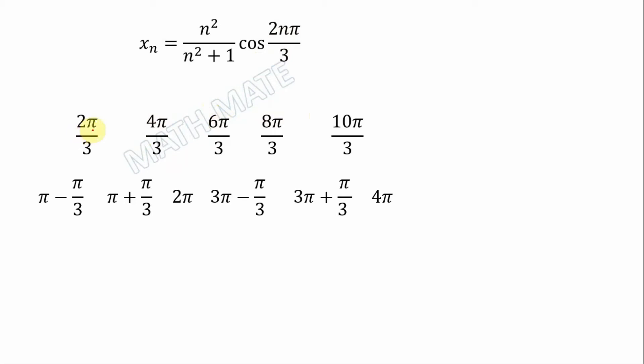We can rewrite 2π/3 as π minus π/3, and others also in this way. Cosine for this angle gives us cosine of negative π/3, which equals negative 1/2.